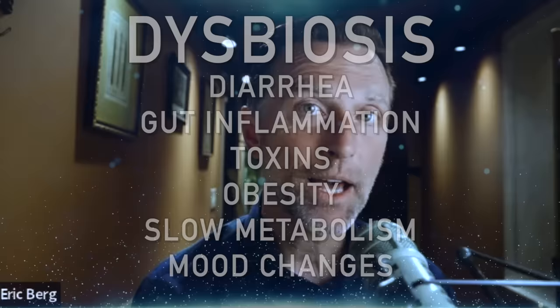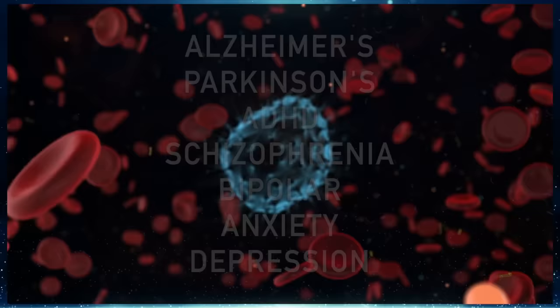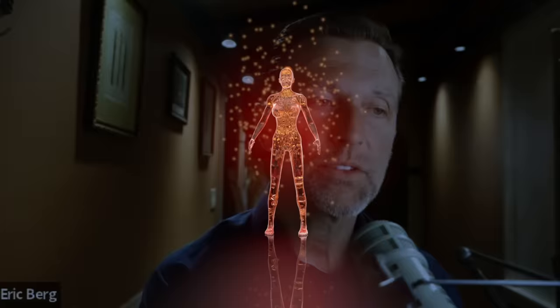Dysbiosis is pretty much involved or associated with every single illness out there — even Alzheimer's, Parkinson's, ADHD, schizophrenia, bipolar, anxiety, depression. Even cancer — there's usually always dysbiosis when you have cancer. So it's so important to have a wide variety of these species to make vitamins for immune protection, keep your inflammation down, feed your colon cells, help you produce amino acids and neurotransmitters and other proteins, and keep your energy high.